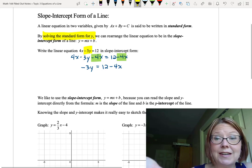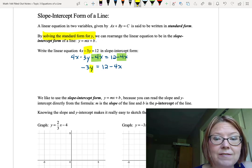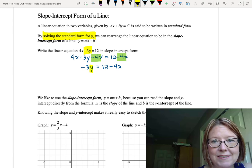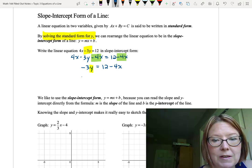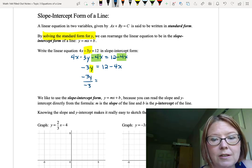This leaves me with negative 3y on the left, and 12 minus 4x on the right. My goal is still to isolate y, and I have negative 3 multiplied by the y. So I'm going to divide both sides by negative 3. That will give me negative 3y over negative 3, and on the right, 12 minus 4x over negative 3.